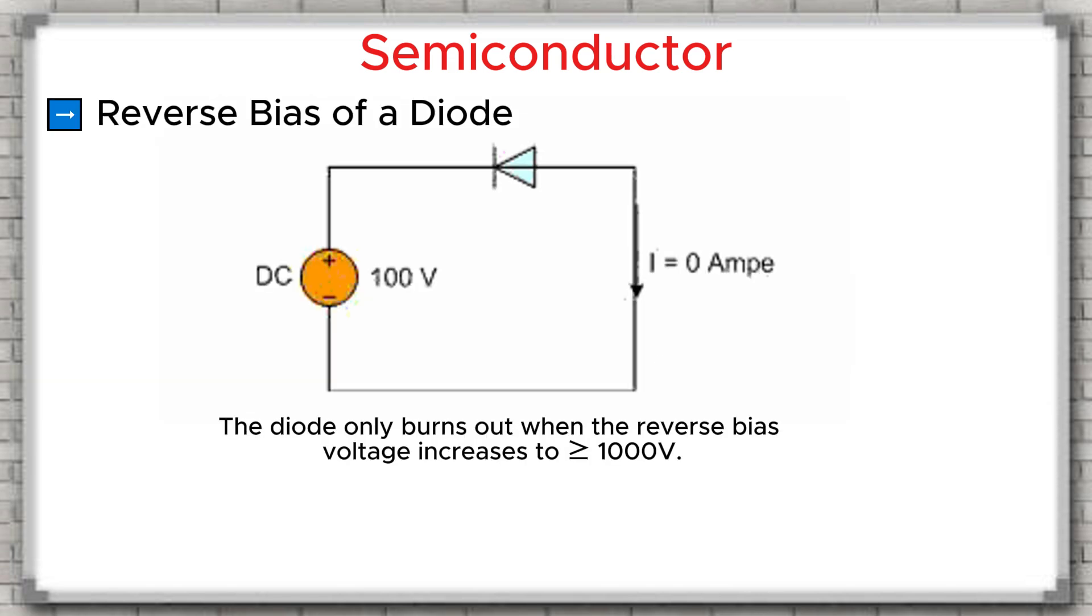Reverse bias of a diode. When a diode is reverse biased, the positive terminal of the power supply is connected to the cathode, which is the N-type region, and the negative terminal is connected to the anode, which is the P-type region. Under the effect of this reverse voltage, the depletion region at the P-N junction becomes wider and wider. This wide depletion region prevents current from flowing through the junction. In fact, a diode can withstand a very large reverse voltage. Only when the reverse voltage reaches a very high level, about 1,000 volts, the diode will break down.